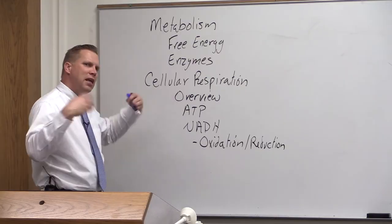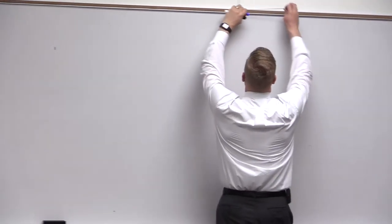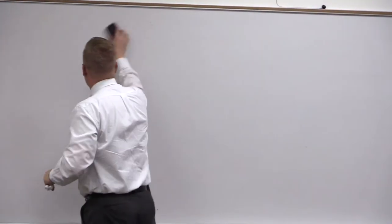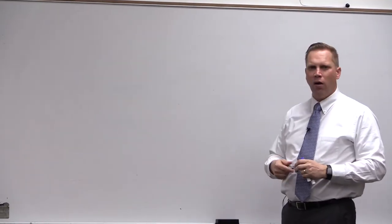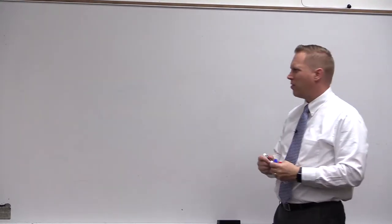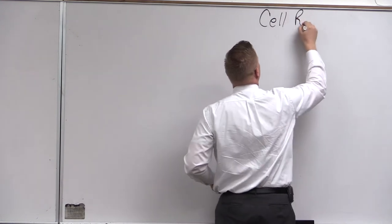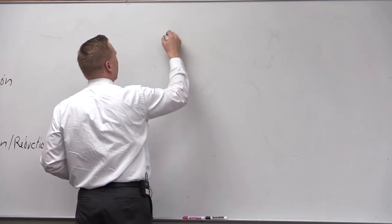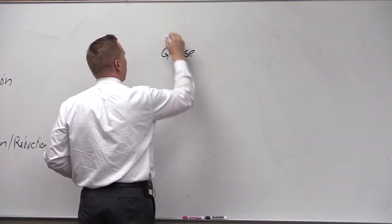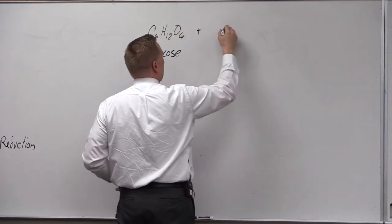We're now moving into examples of metabolism, going over the cell respiration pathway. We'll spend about a day on the major parts of this, starting with what I call a black box overview. Overall, cell respiration is going to be the conversion of glucose — C6H12O6 — and we're going to add oxygen to that.